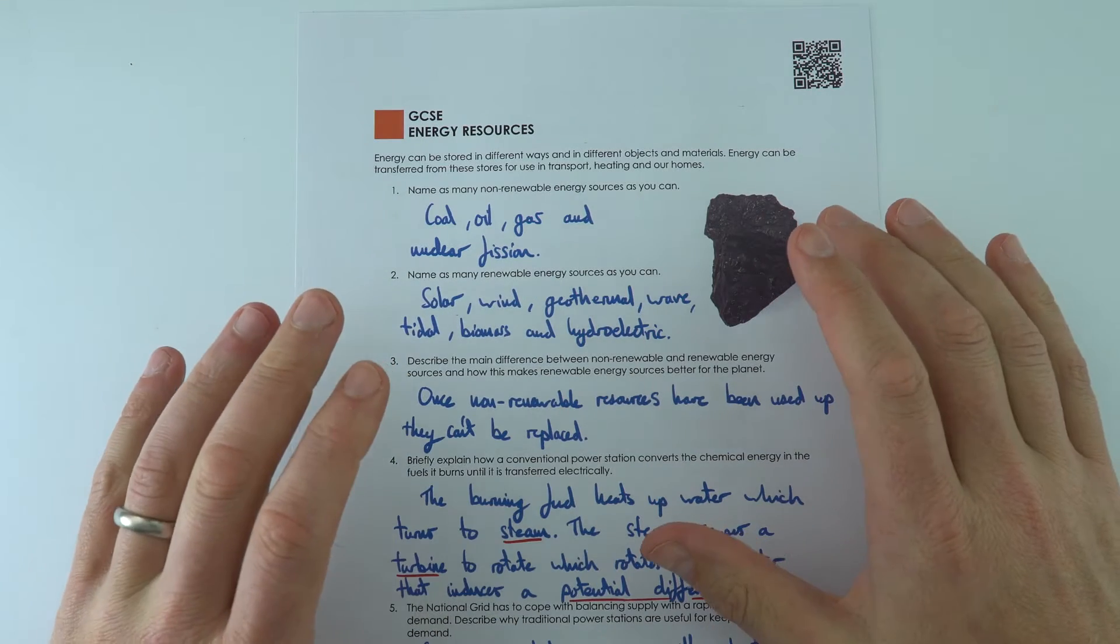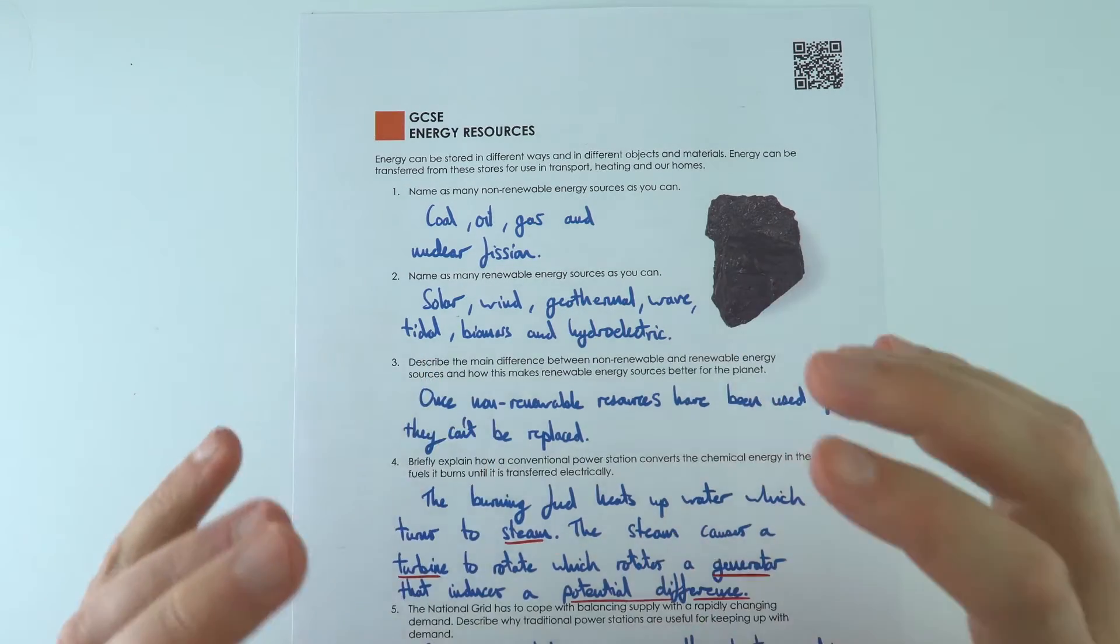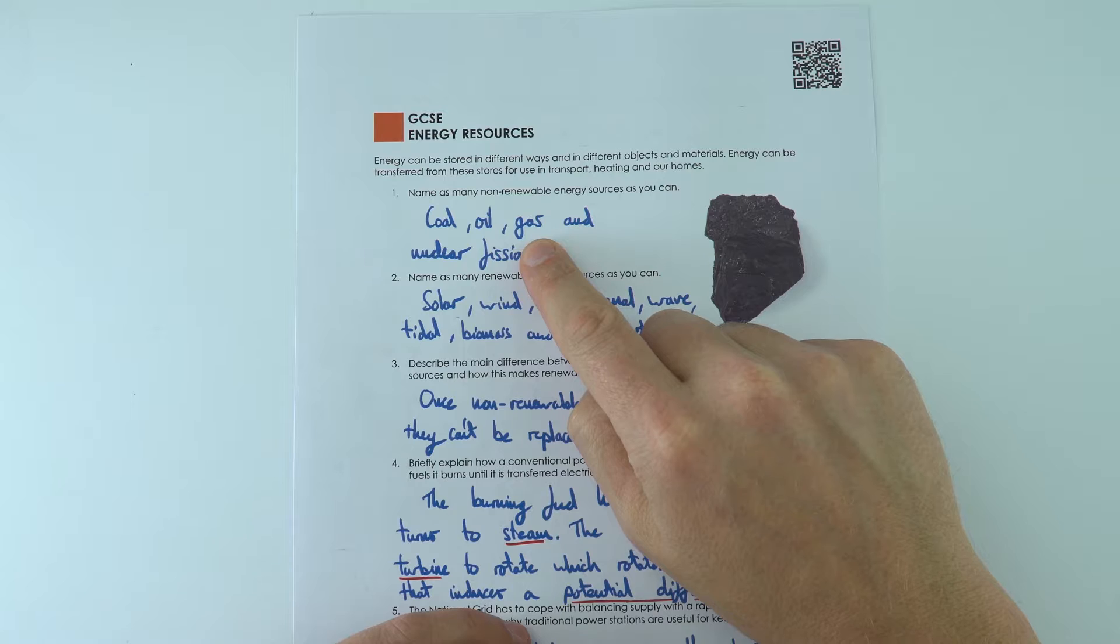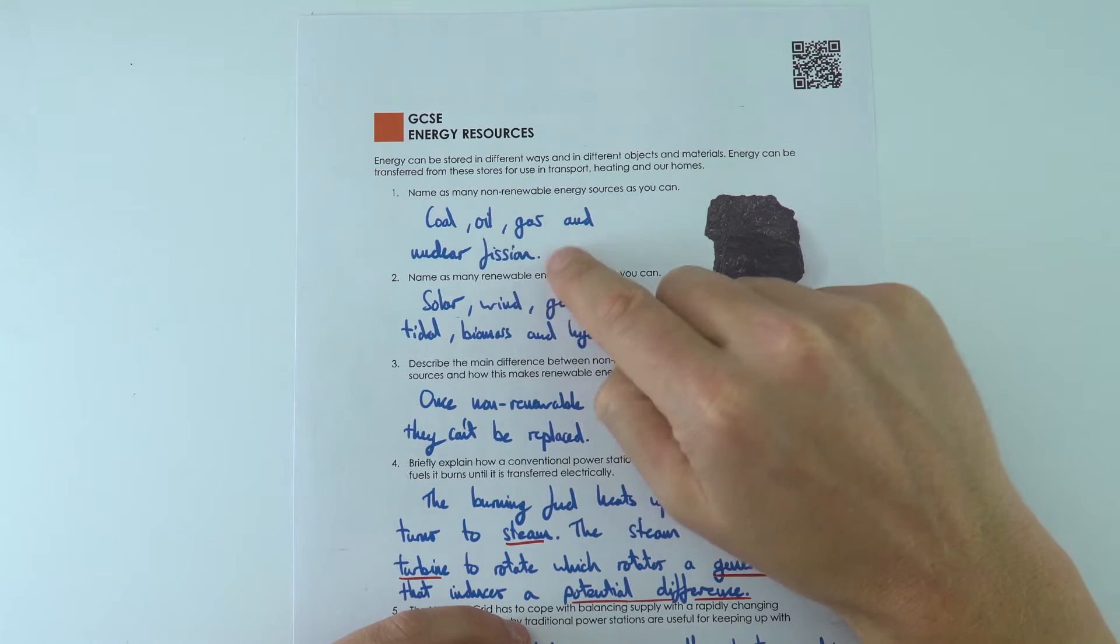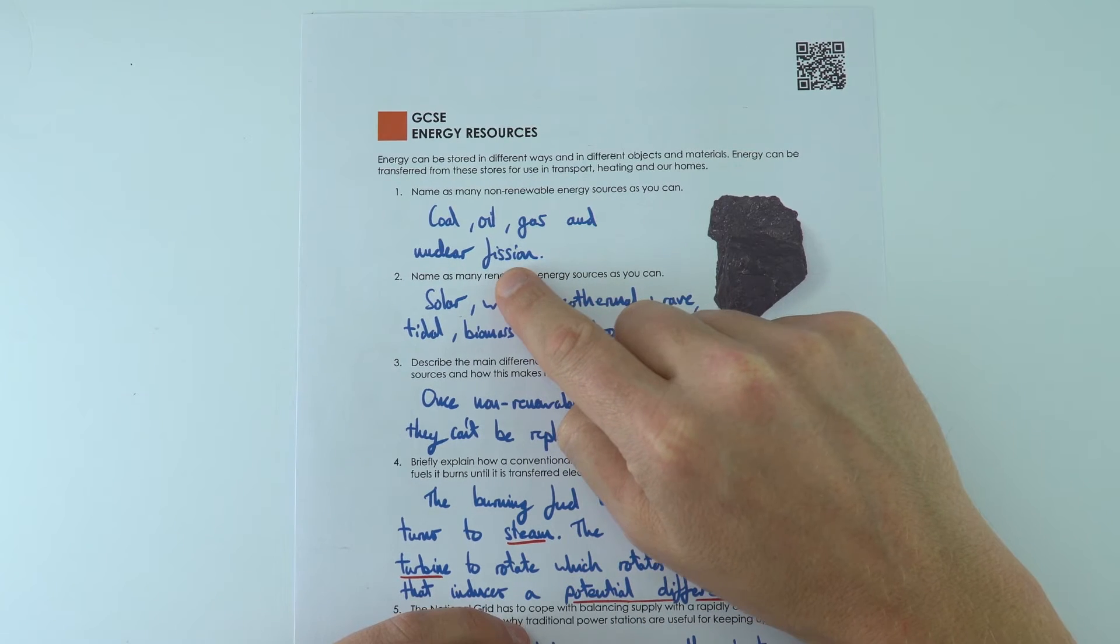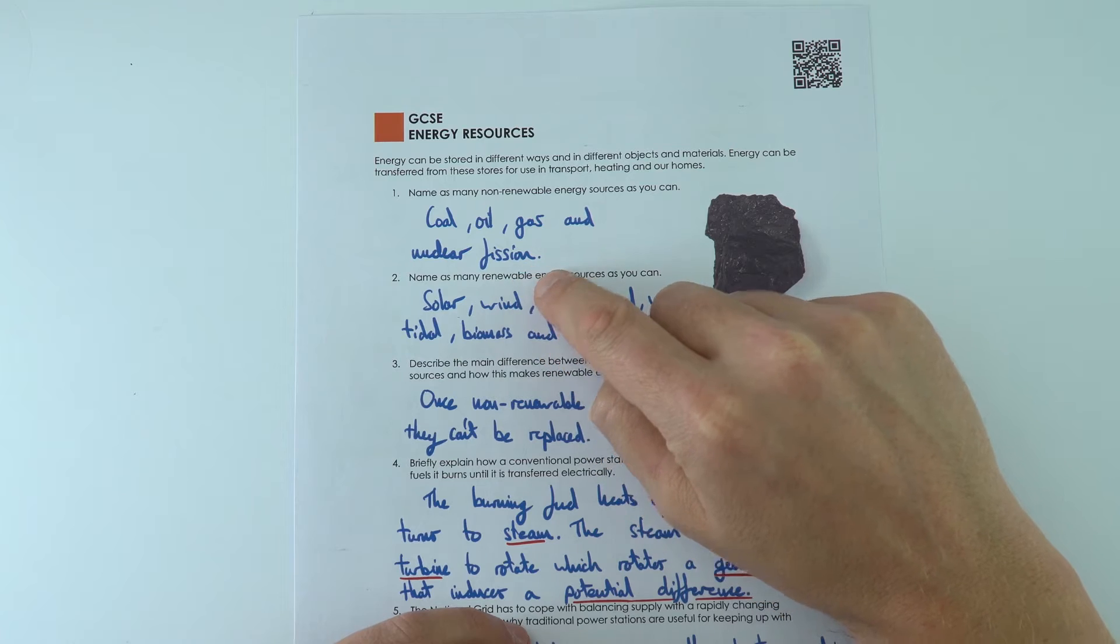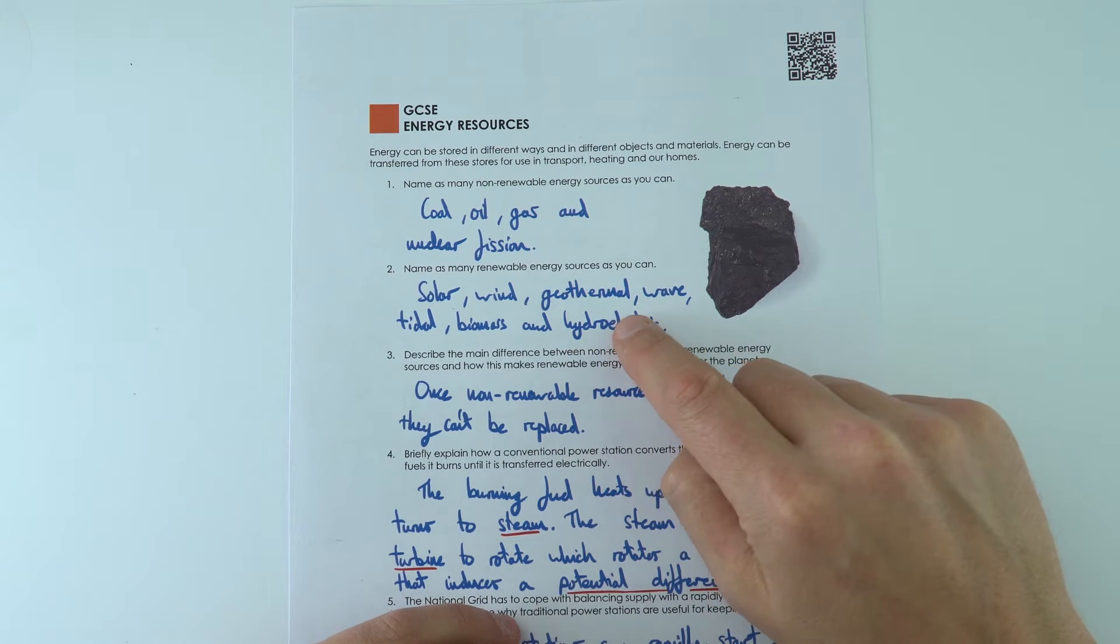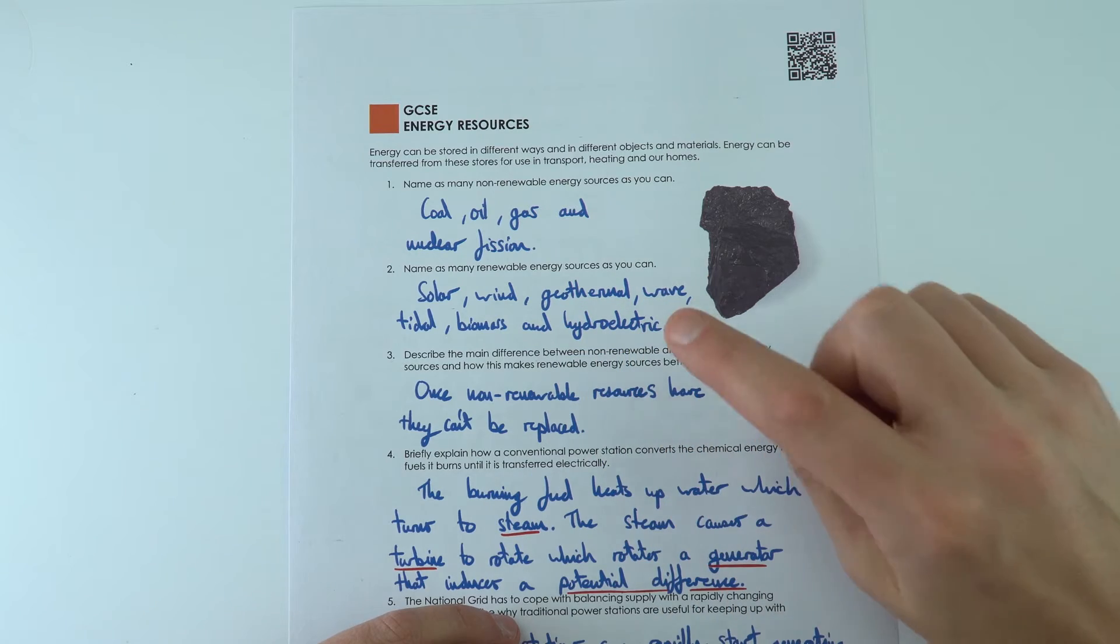This worksheet about energy resources is super important for our world. Basically for too long we've relied on non-renewable sources like coal, oil and gas, and also to some extent nuclear fission, which is using uranium in nuclear reactors. We're trying to move towards more sustainable renewable energy sources, and here are some of the main ones listed.